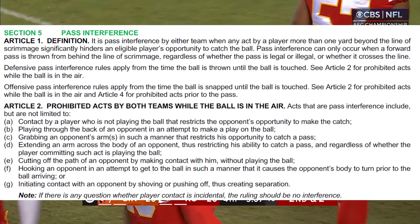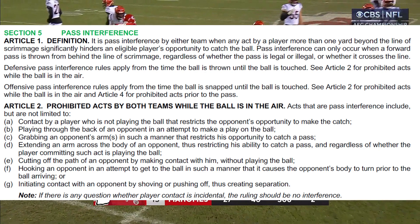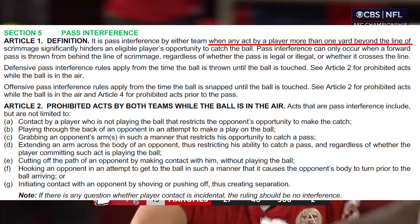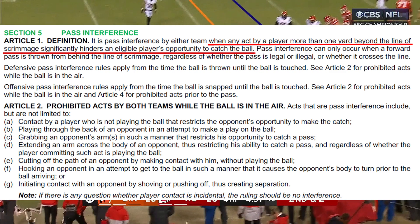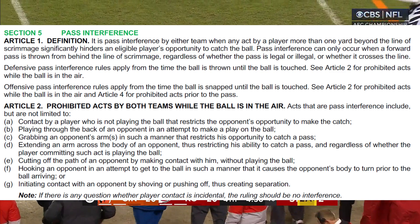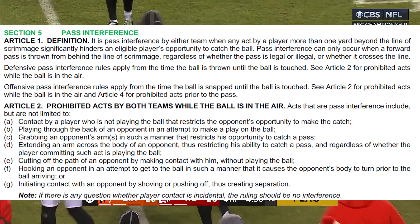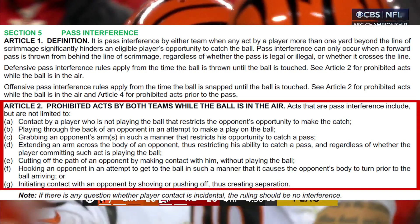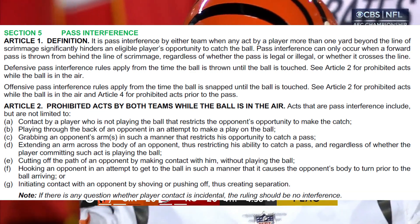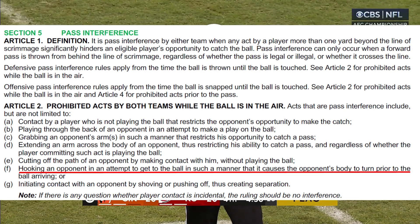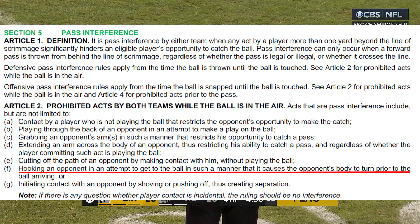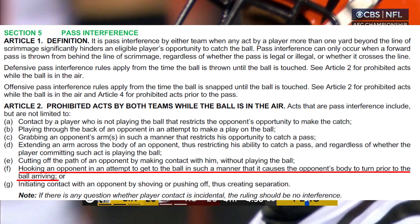Here's the rule for pass interference. The only thing we'll say about the definition is the first sentence — it says when any act by a player more than one yard beyond the line of scrimmage significantly hinders an eligible player's opportunity to catch the ball. There are some exceptions to this, like when the ball is tipped, that don't apply here. Now we go to Article 2. The one we're going to focus on is Item F: hooking an opponent in an attempt to get the ball in such a manner that it causes the opponent's body to turn prior to the ball arriving.